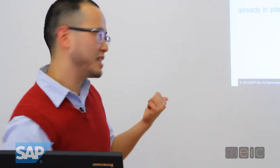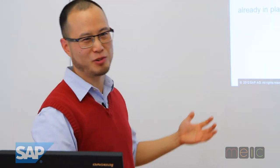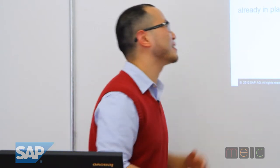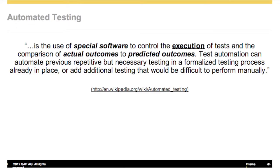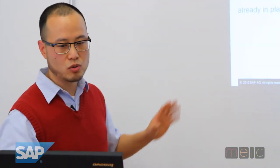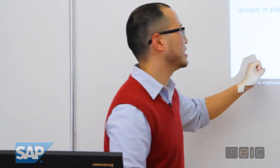So what is automated testing? According to Wikipedia — and Wikipedia is always right — automated testing is the use of special software to control the execution of tests and the comparison of actual outcomes to predicted outcomes. Test automation can automate previously repetitive and unnecessary testing in a formalized testing process already in place, or additional testing that could be difficult to perform manually. A key thing to catch here: it's the execution part that's automated, not the thinking part.